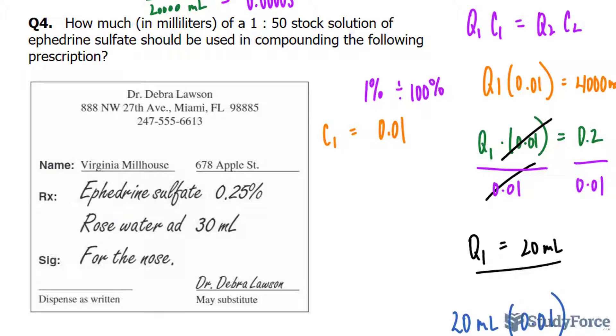The doctor writes ephedrine sulfate 0.25%, that needs to be made into a decimal, so 0.0025, simply divide that by 100. And it needs to be 30 milliliters, so its volume or its quantity, Q2, is 30 milliliters.